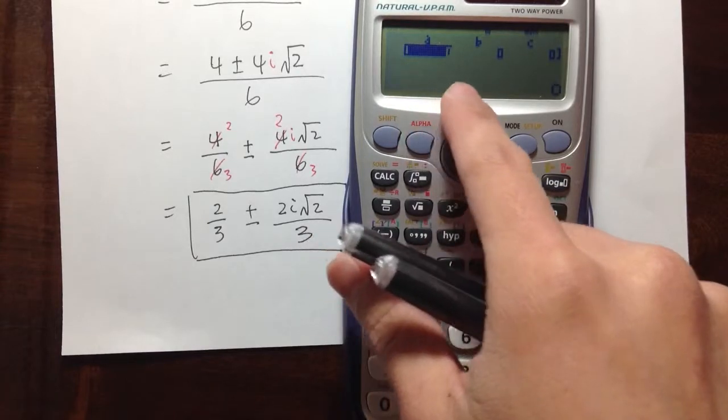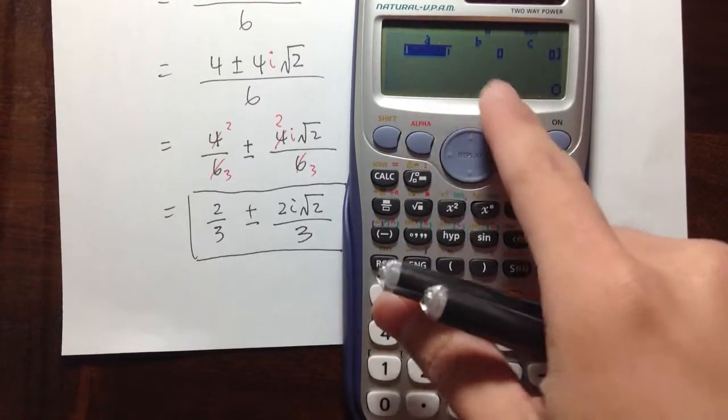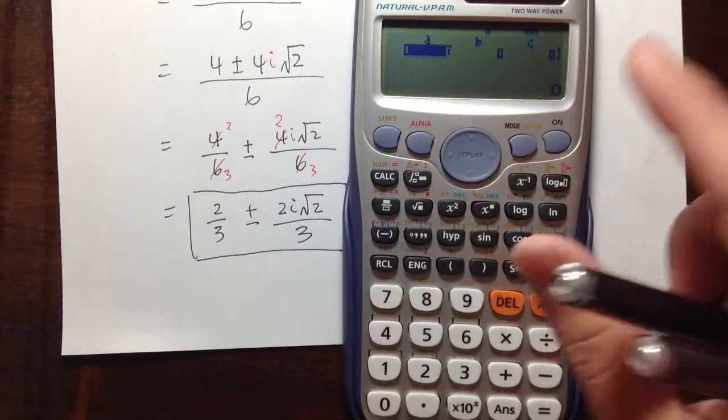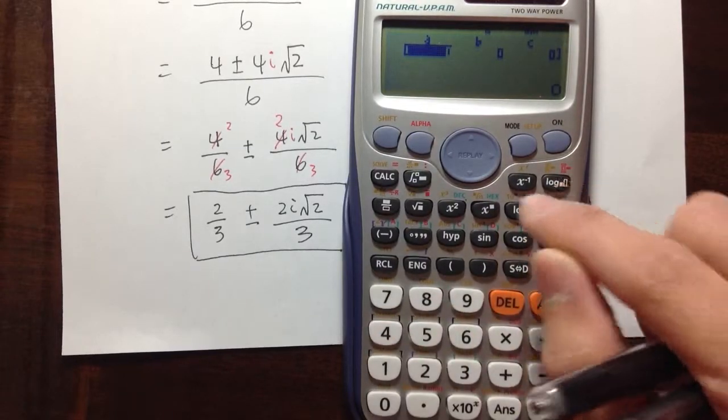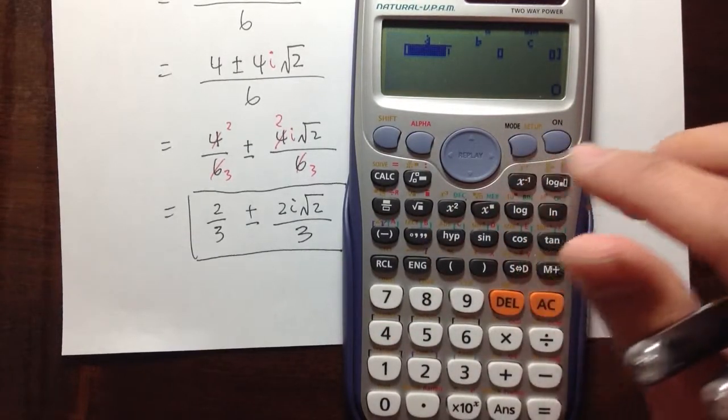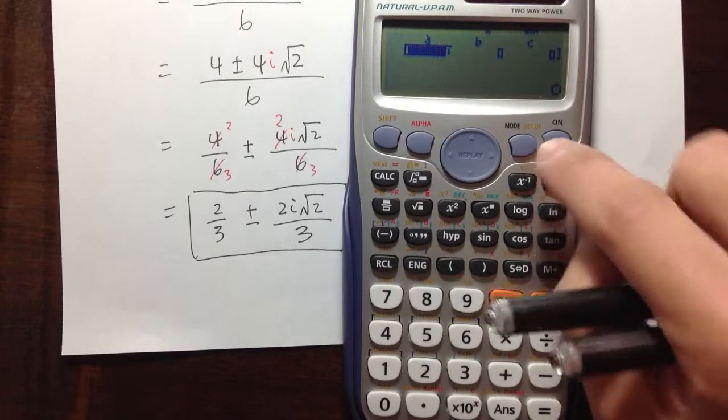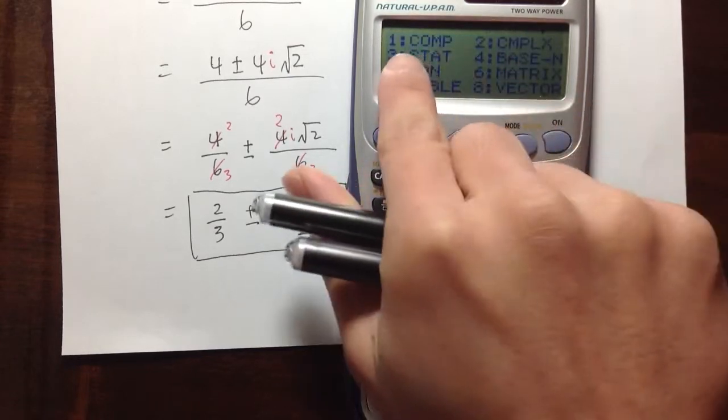Let's say I want to just do some regular computation, like 3 plus 7, things like that. Well, how do we get back to the original mode, the normal mode? You go to mode and then hit number 1.